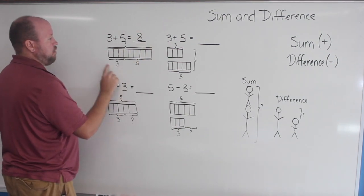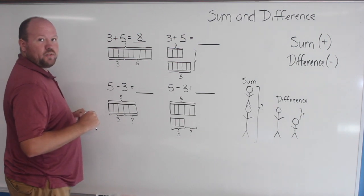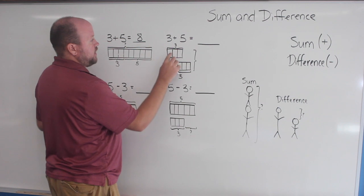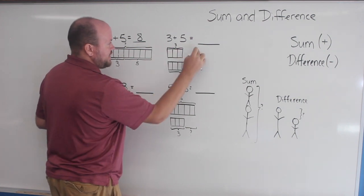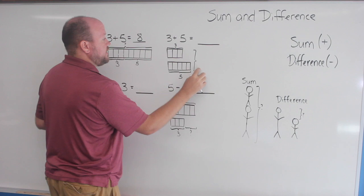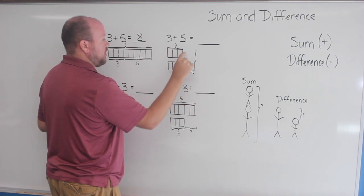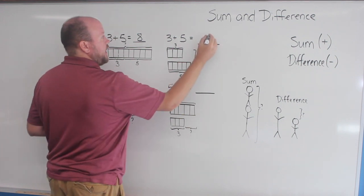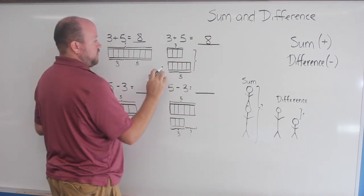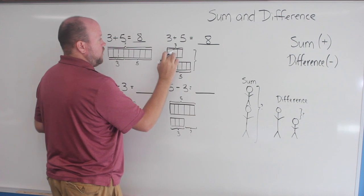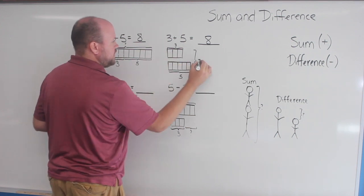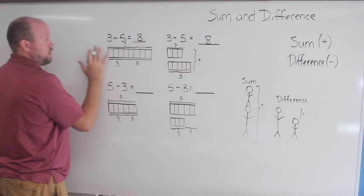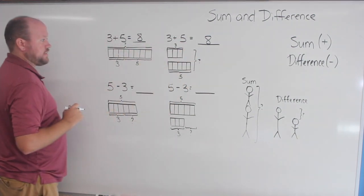This is called a part-whole bar model. And there will be another video on part-whole bar models coming. Here we see, we're going to still add them. But this bracket over here identifies that I want to know what this bar and this bar are together. Three and five. Now we should know that that adds up to eight. But if not, with this one, because the lines are drawn, one, two, three, four, five, six, seven, eight. And so here we see that these two kinds of models in this situation represent the sum.